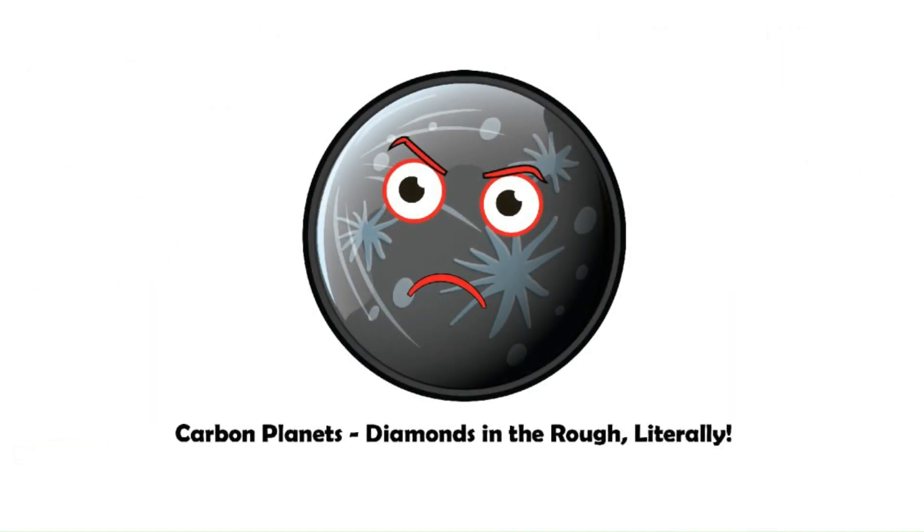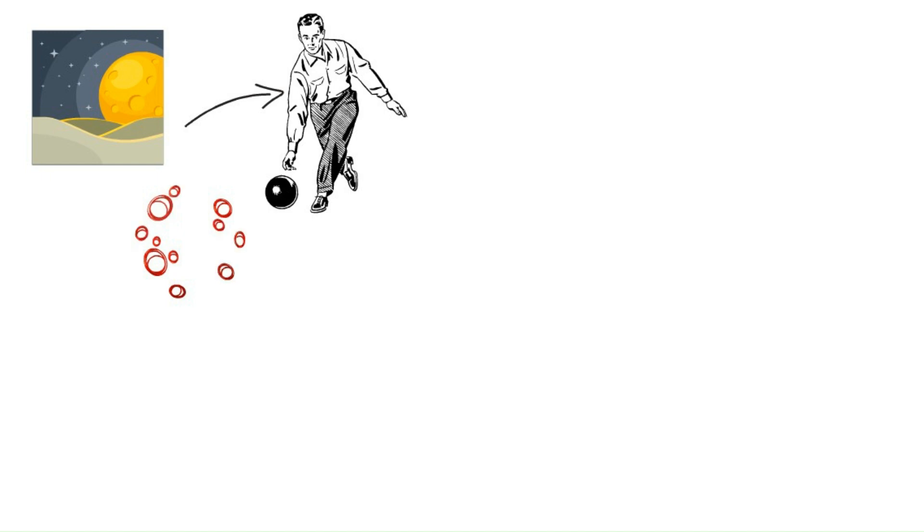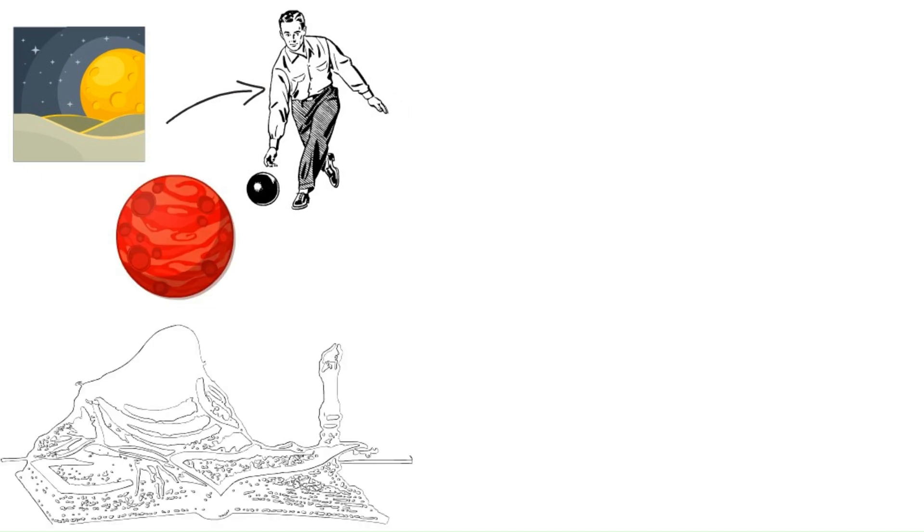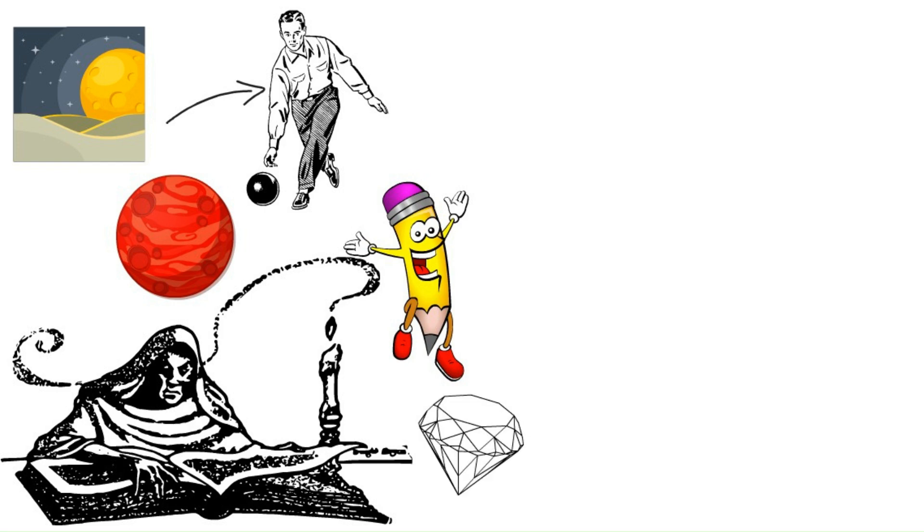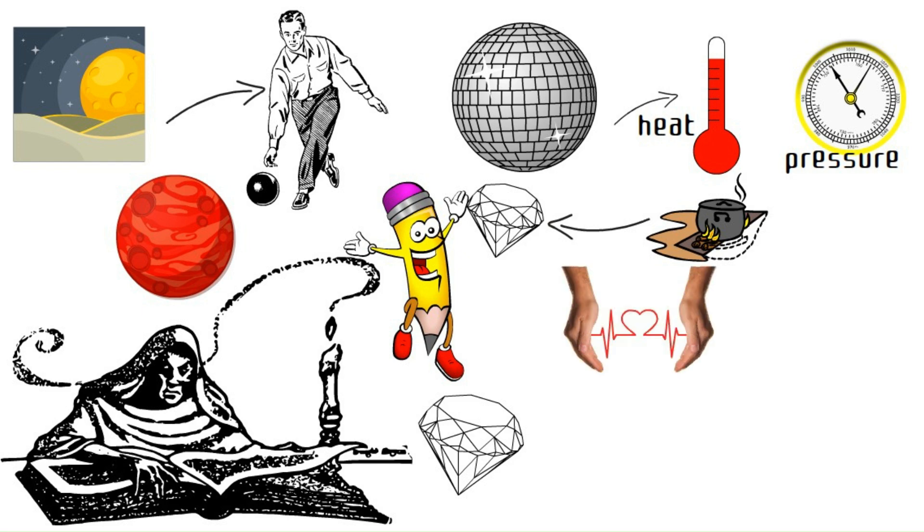Carbon planets, diamonds in the rough, literally. The universe loves throwing us curveballs, and carbon planets are a prime example. These theoretical worlds are thought to have surfaces laced with graphite or even diamond. Imagine a giant disco ball planet. The intense heat and pressure on these planets could have cooked up all the carbon into these exotic forms. These planets might not be ideal for life, but they show wild ways planets can form.